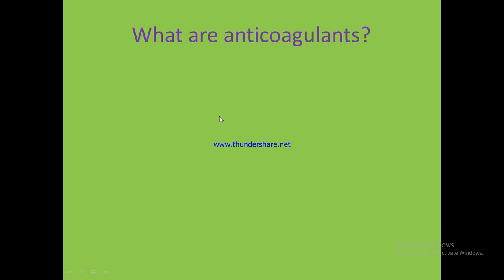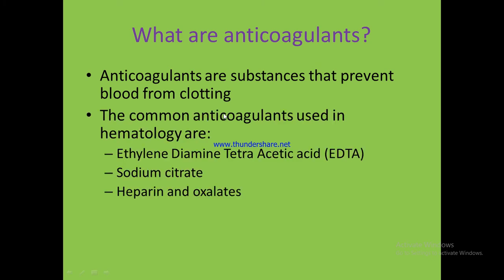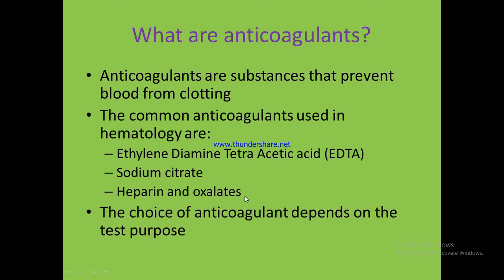What are anticoagulants? Anticoagulants are chemical substances which prevent blood from clotting. There are different types of anticoagulants, for example: Ethylene Diamine Tetraacetic Acid or EDTA, sodium citrate, heparin, and oxalates. Anticoagulants are used depending on the type or purpose of the test.